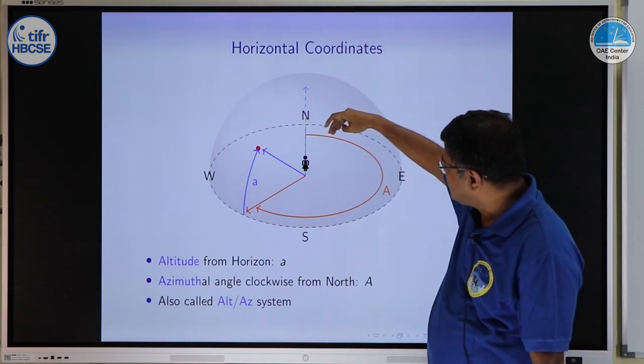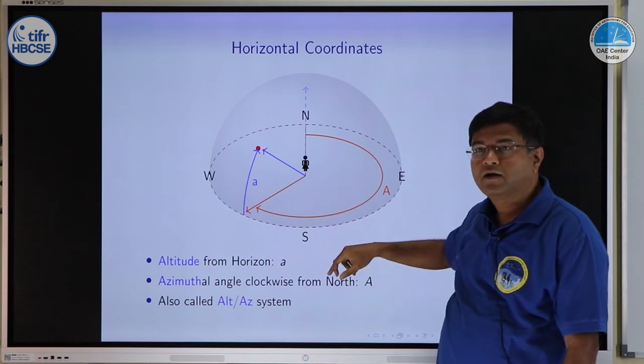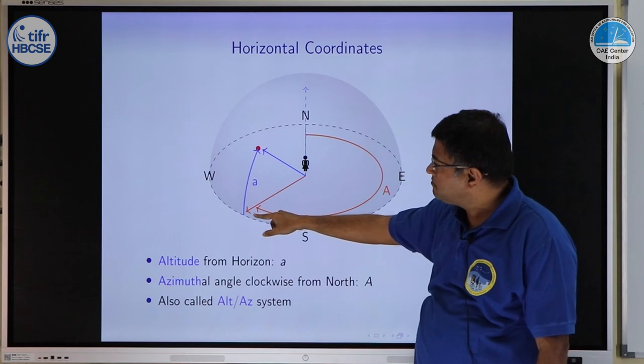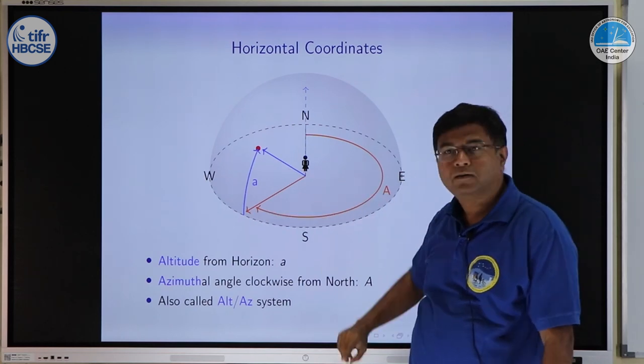Here you can see azimuth is shown by the orange arrow, you go up to the direction where the star is and then altitude is shown as the blue arc.